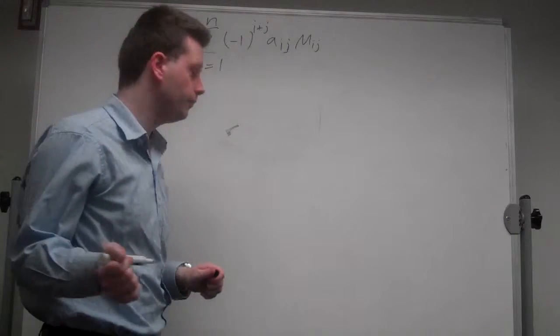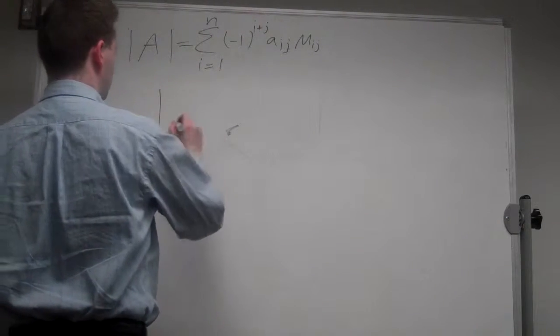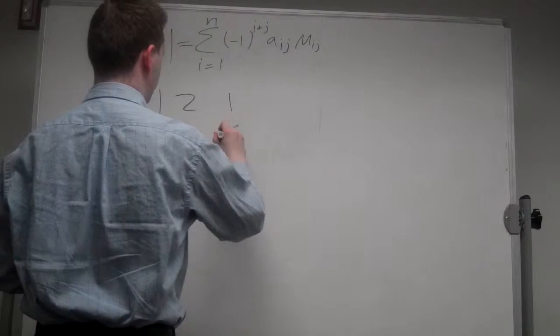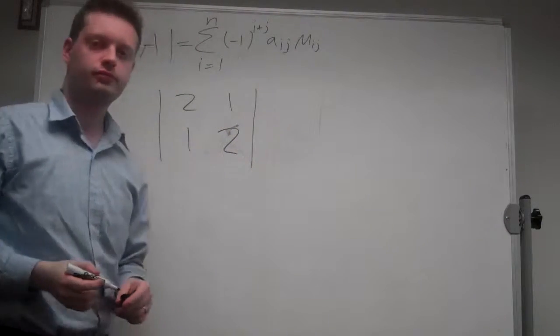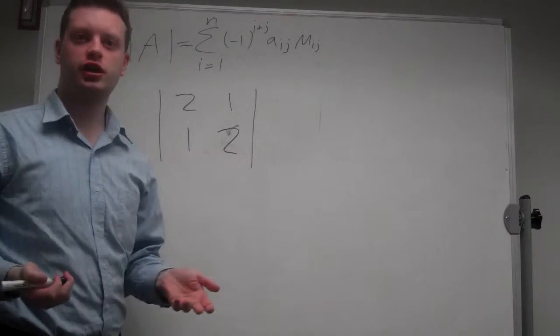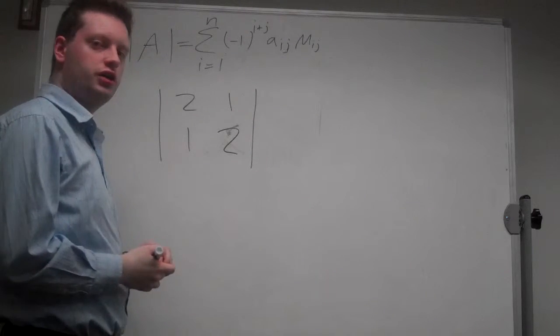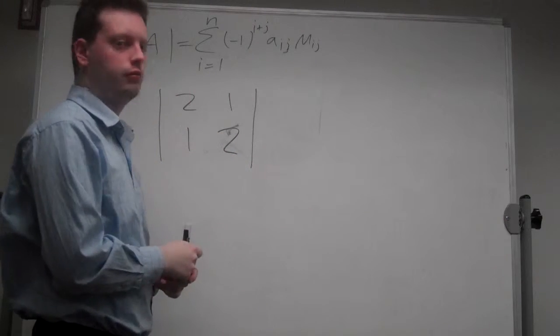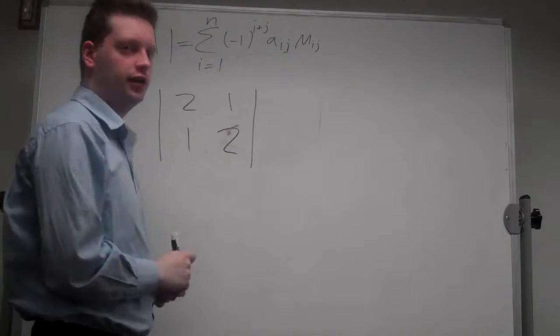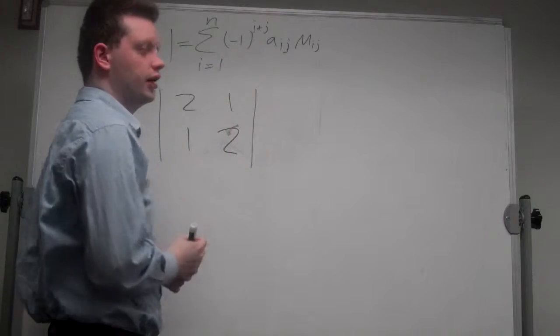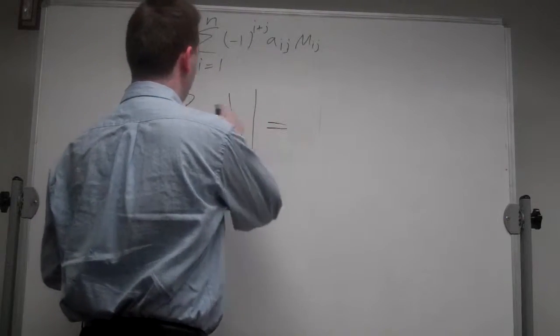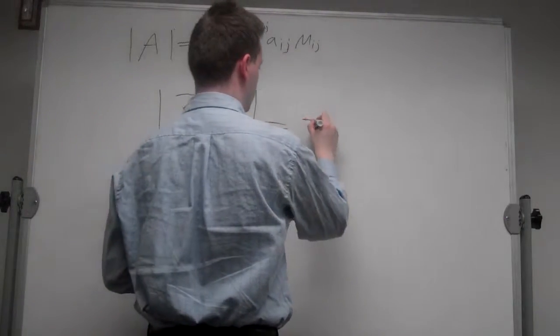Let's start with an example. Take the matrix [2, 1; 1, 2]. If you already learned how to calculate the determinant for a 2 by 2 case, you know it's the product of the falling diagonal minus the product of the rising diagonal. So in this case, 4 minus 1 equals 3.